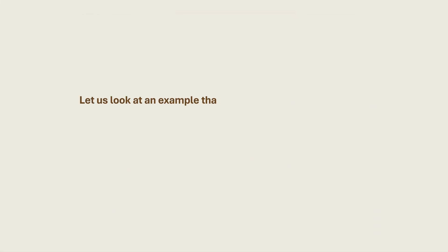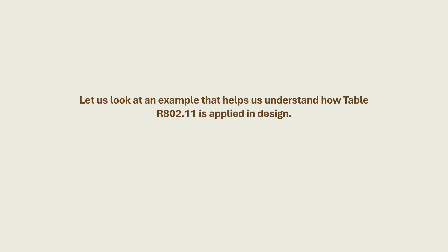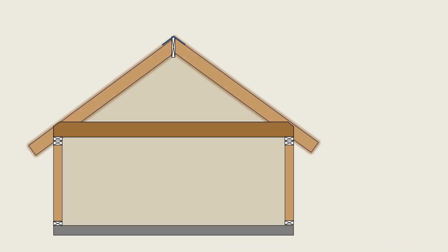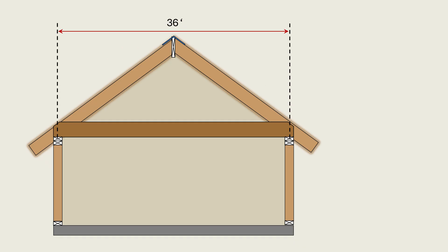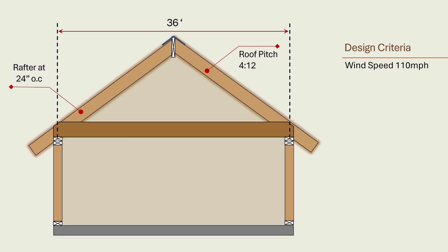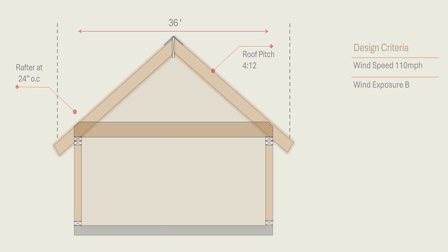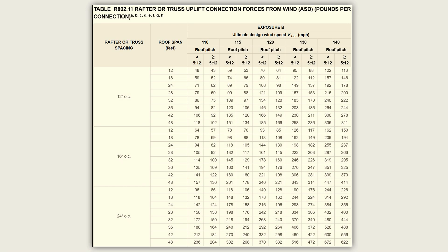Let us look at an example that helps illustrate how Table R802.11 is applied in design. Consider a one-story enclosed residential building with a gable roof framed using conventional rafters. The roof has a horizontal span of 36 feet, a roof pitch of 4 to 12, and rafters spaced at 24 inches on center. The building is located in a region with a basic wind speed of 110 miles per hour in a suburban region classified as wind exposure B. No unusual topographic or enclosure conditions are assumed, and the building qualifies for prescriptive construction under the IRC.